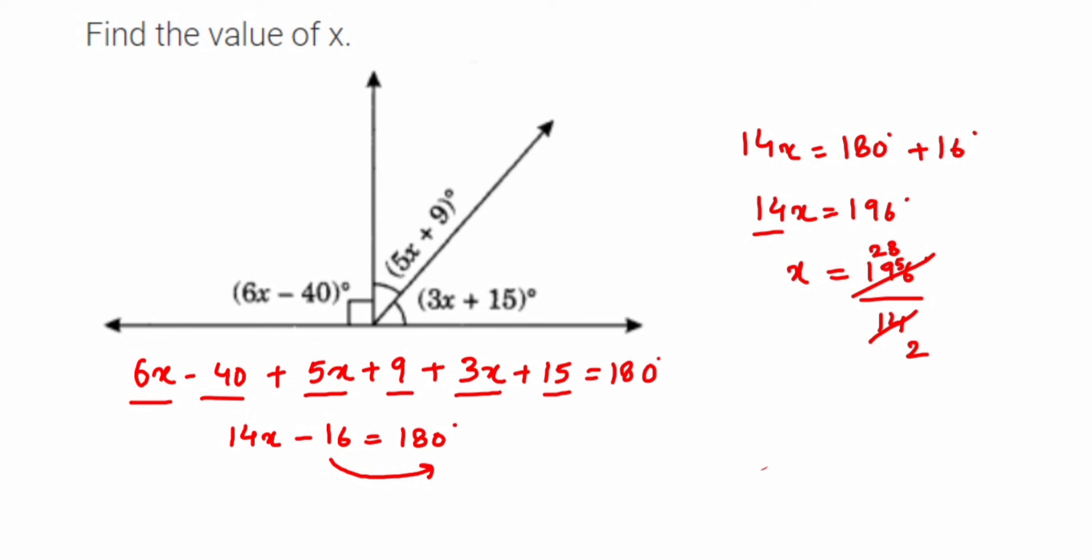Now again we can cancel 28 and 2 in two tables. So two ones are, and then this is two ones are two, and then two fours are eight. Therefore we got x is equal to 14. So if you cancel this in any table, you can start canceling in a two table or you can directly cancel this in 14 table, but you always end up with the same answer.